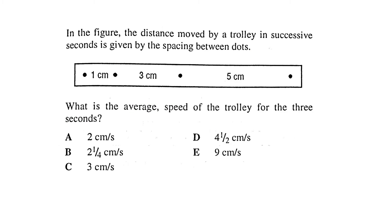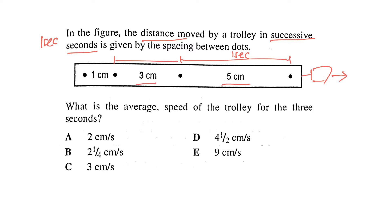In this question, the distance moved by the trolley in successive seconds is given by the dots. Assuming the car is moving to the right, in the first second it travels 5 cm, the next second 3 cm, and the third second 1 cm. The distance covered is getting smaller every second, so the car is decelerating and its speed is decreasing.